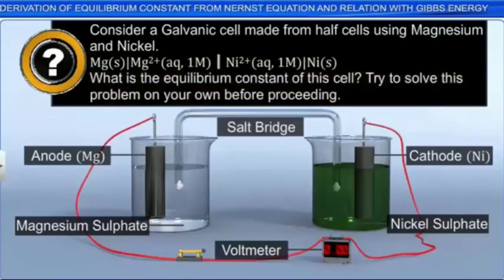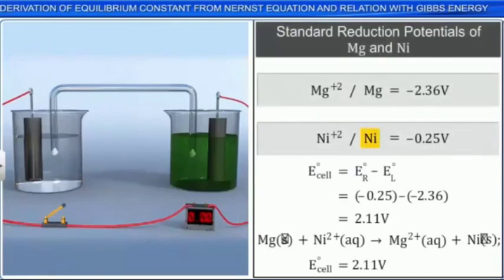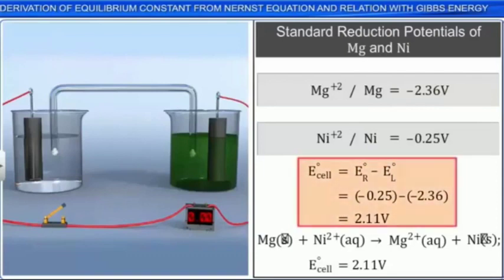Let's start with the half reactions to find E cell. Since nickel has the greater reduction potential, it is the cathode, and magnesium is the anode. By substituting the standard reduction potential values, as shown in the equation here, you can find that E cell is 2.11 volt.